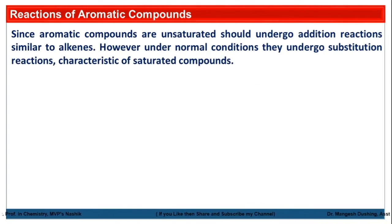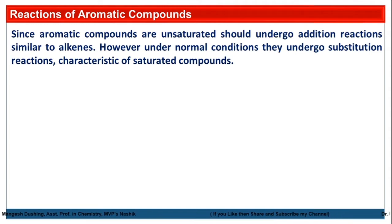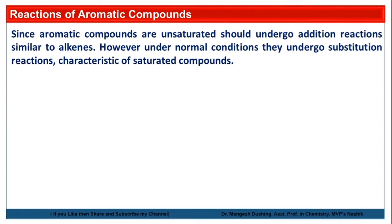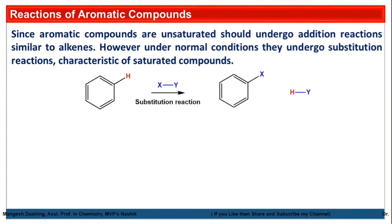Since aromatic compounds are unsaturated and contain double bonds, they should undergo addition reactions similar to alkenes. However, under normal conditions, they undergo substitution reactions — which is characteristic of saturated compounds. Even though aromatic compounds are unsaturated, they show substitution reactions rather than addition reactions. In the substitution reaction, a hydrogen of the benzene ring is replaced by an atom or group from the reagent.